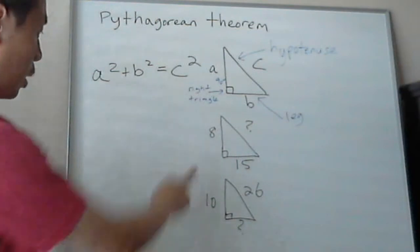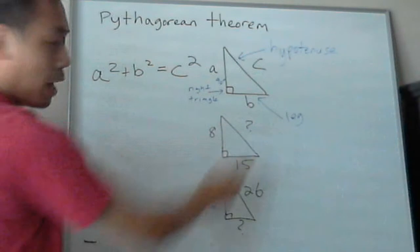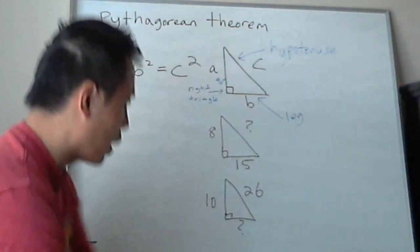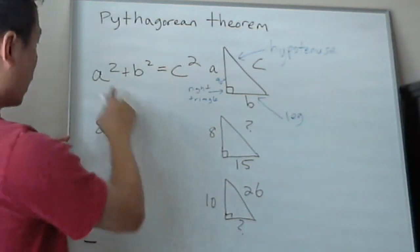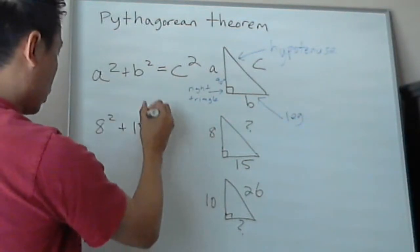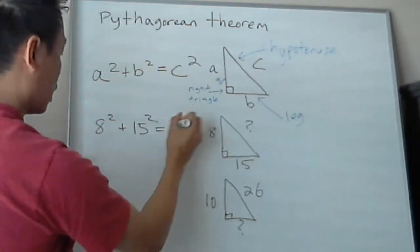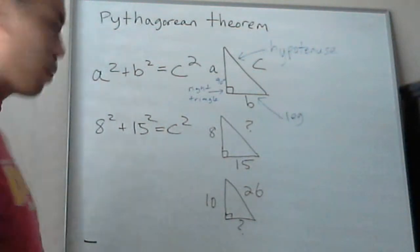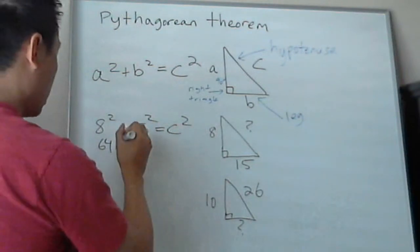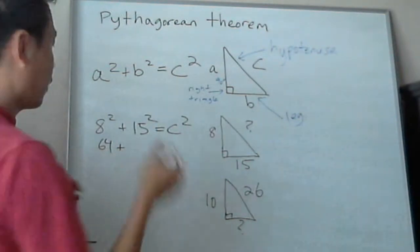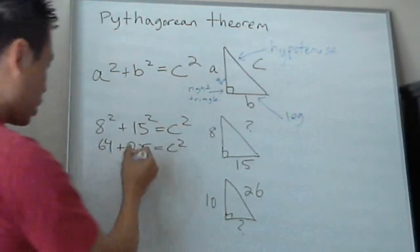Here's the first example. So what if you have 8 as one leg, 15 as the other leg. So how do you find this side? Which is hypotenuse, right? So you just basically, 8 squared, that's a, plus b squared. That's b, right here, equals c squared. And then you just do some algebra. 8 squared is 64, 8 times 8. Plus 15 squared, which is 15 times 15, this is 225. Equals to c squared. And then you just add the numbers up.